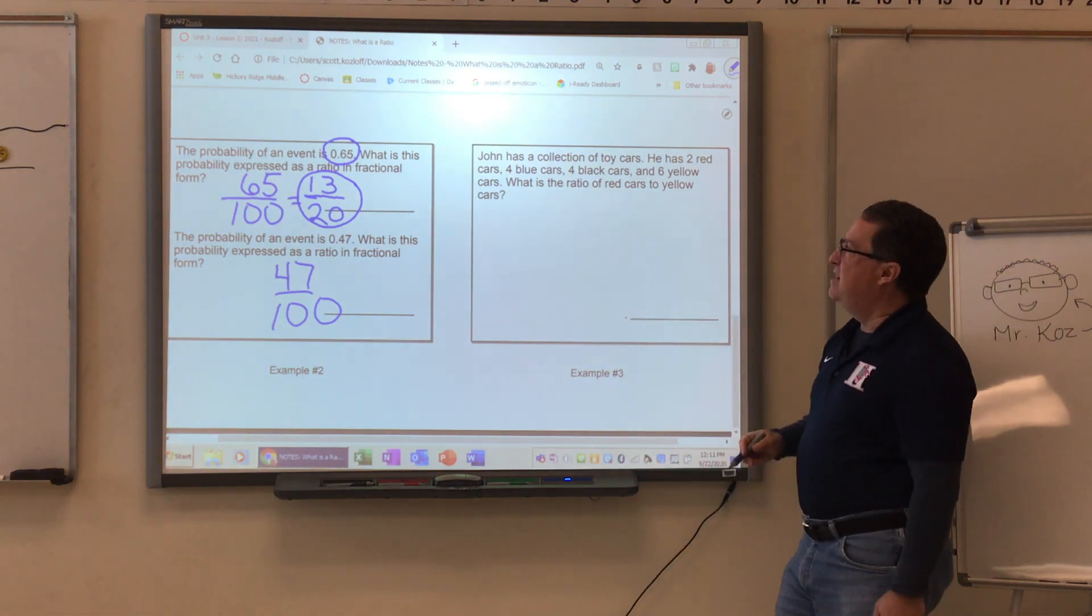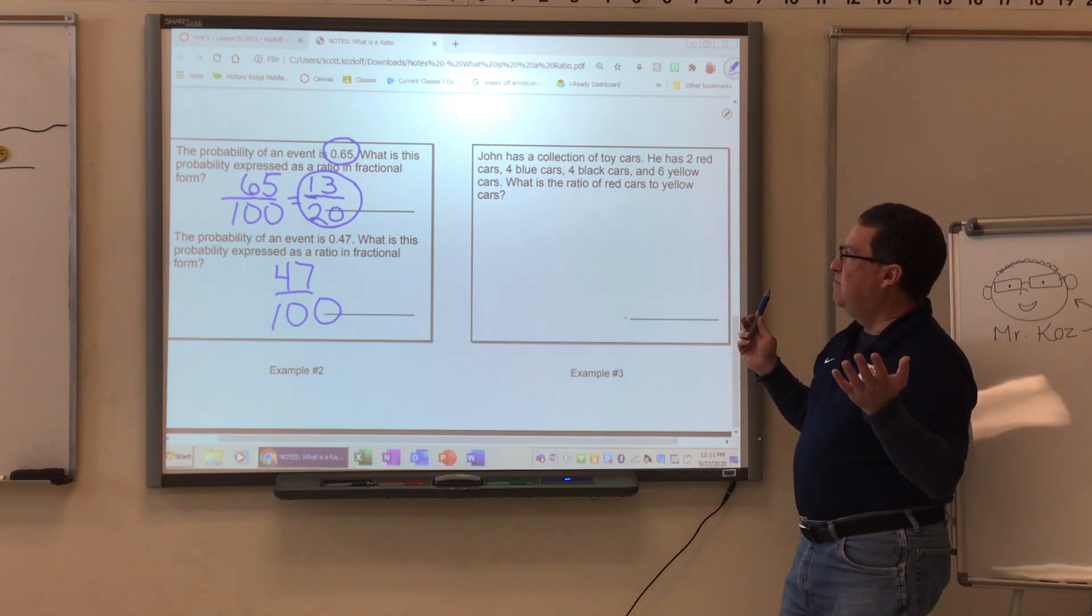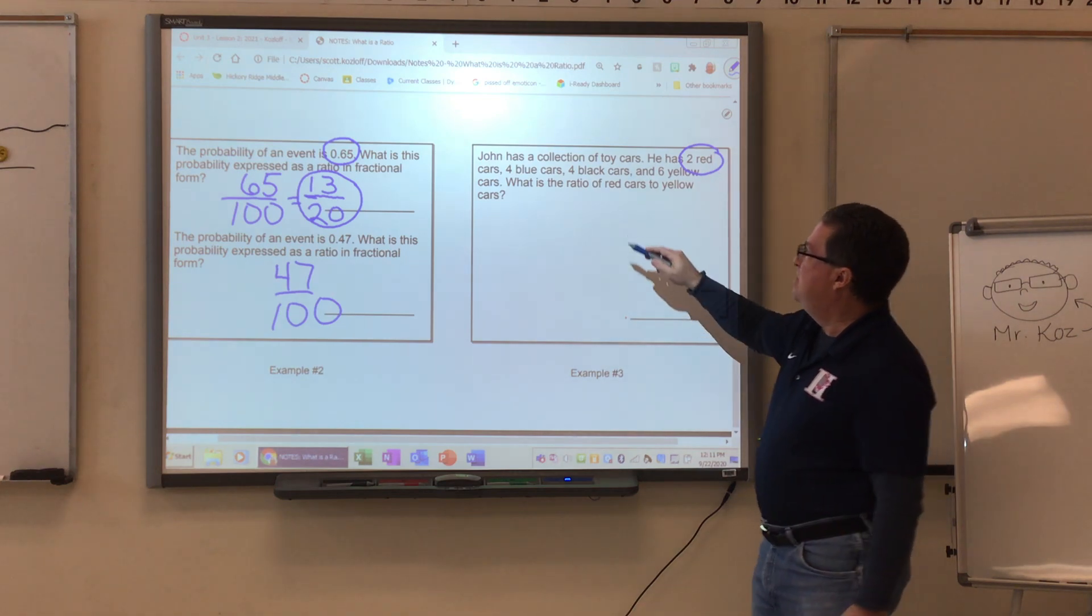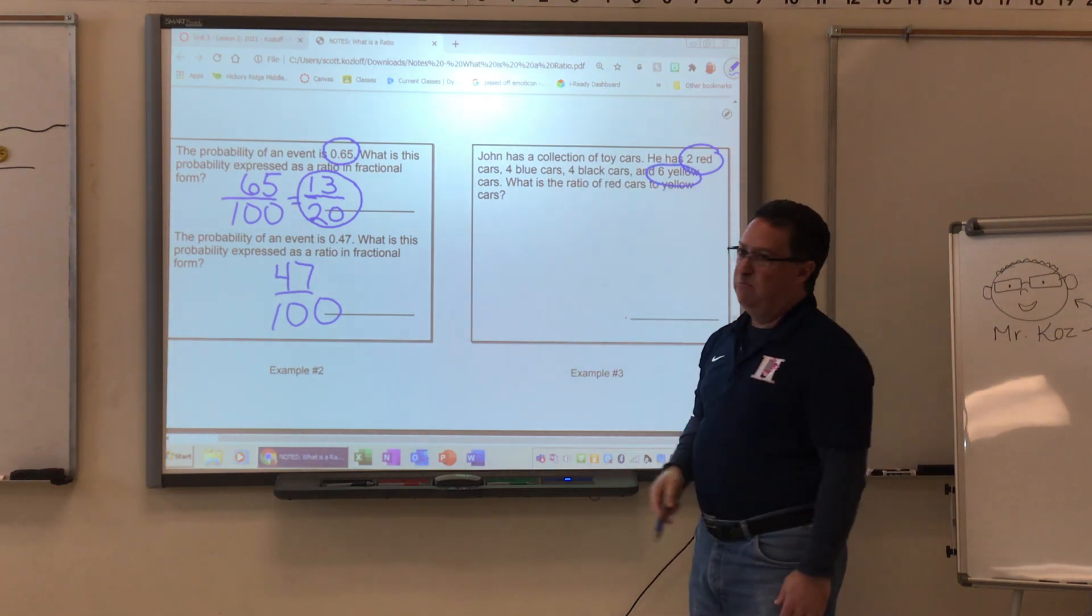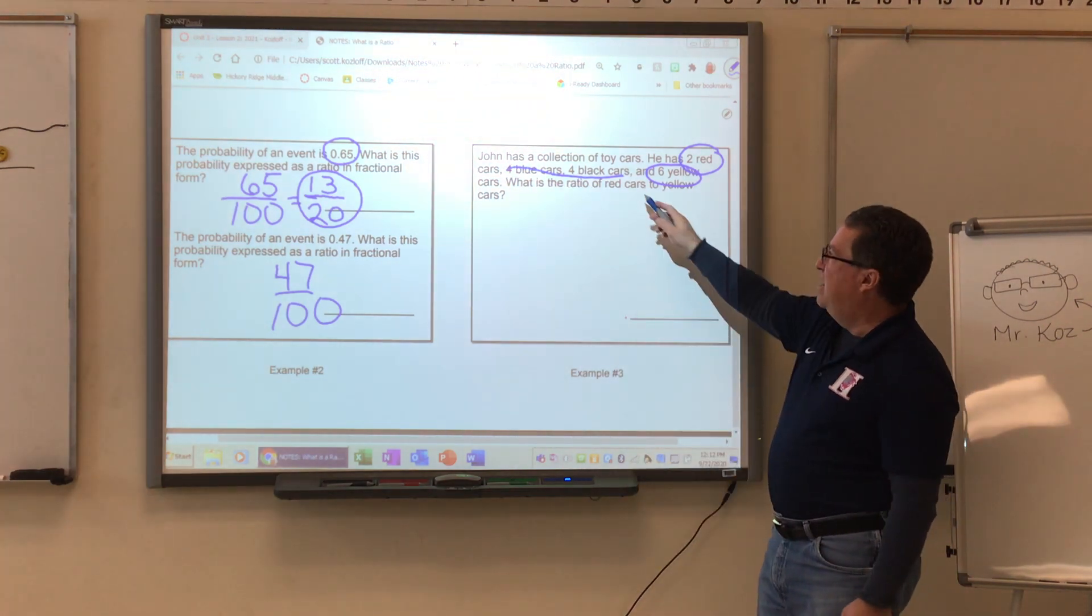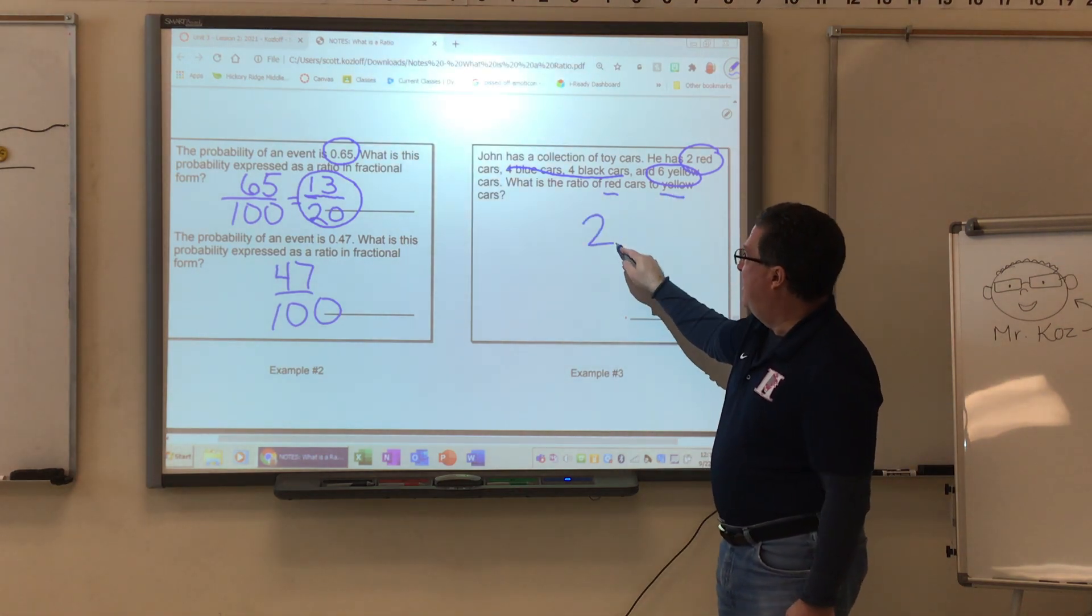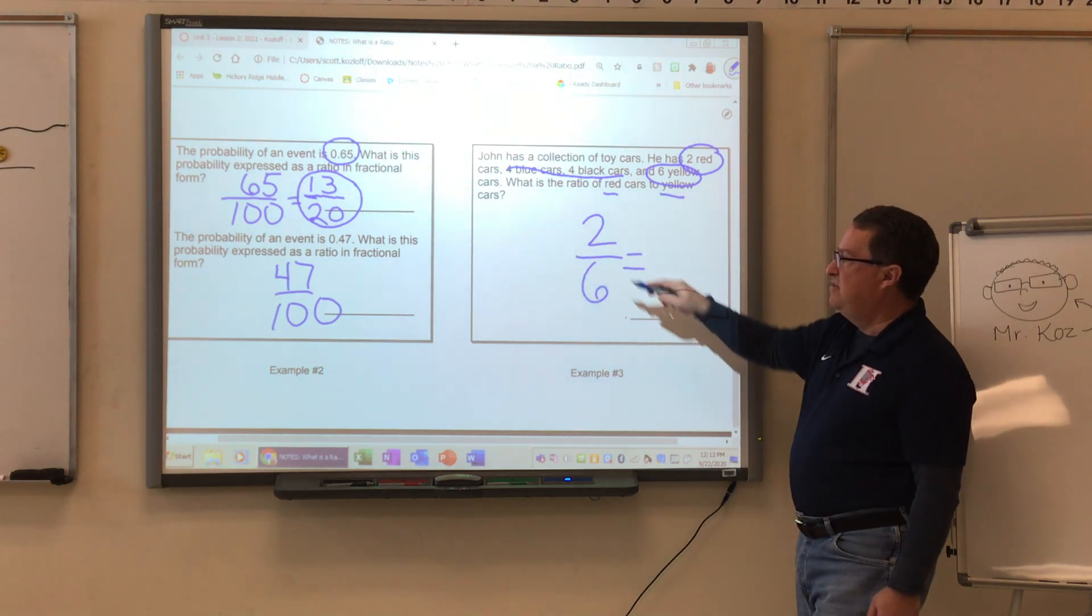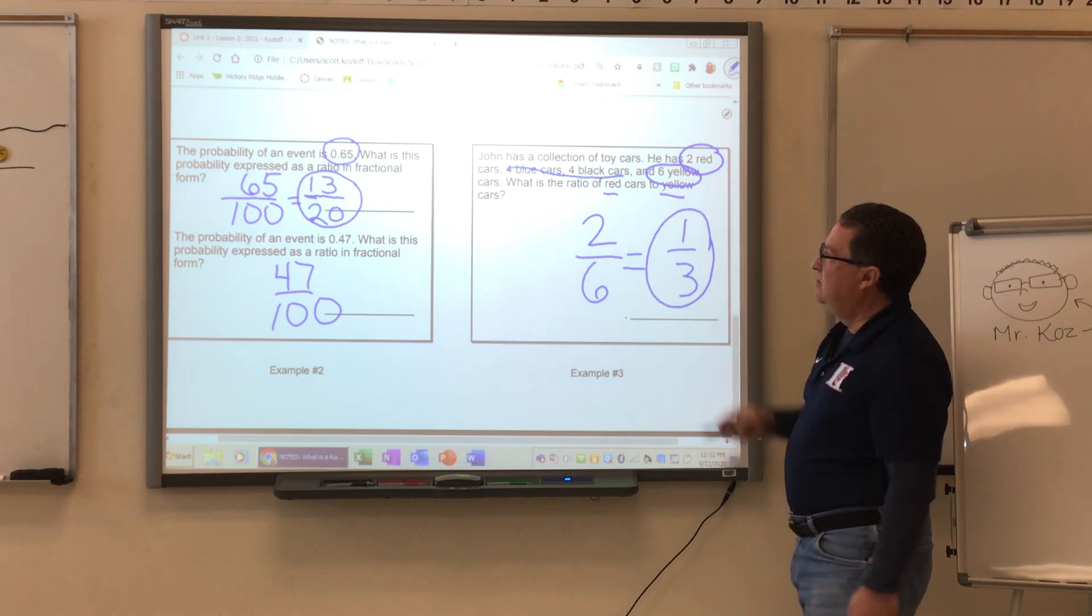Last but not least, John has a collection of toy cars. He's got red ones, blue ones, black ones, yellow ones. What is the ratio of red cars to yellow cars? Do I need to know about black and blue? I do not. I can cross those out. But I do need to make sure I write them in the right order. Red on top of yellow. Then I divide both of these by 2. And there is my final ratio.